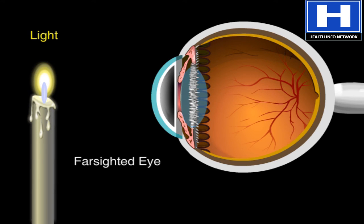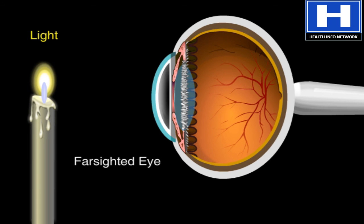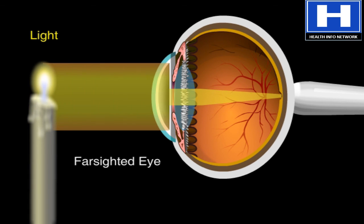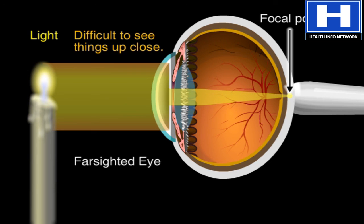Farsightedness is just the opposite. The eye's length is too short. When that happens, the focal point is behind the retina. So it's difficult to see things that are up close.